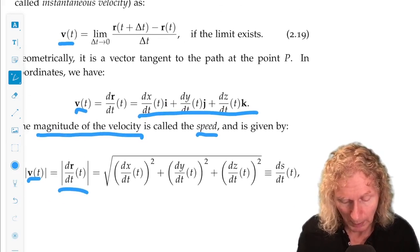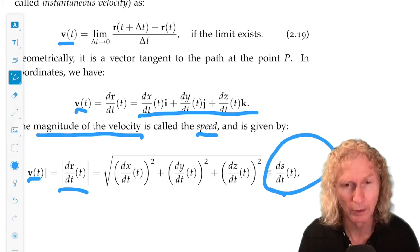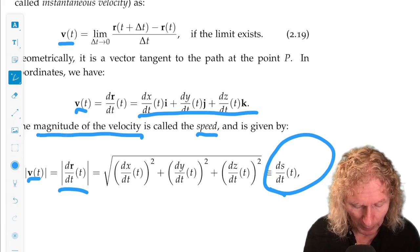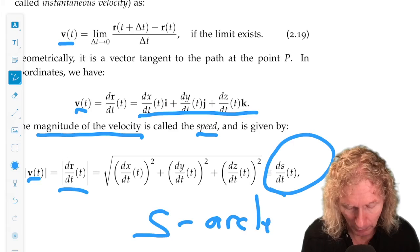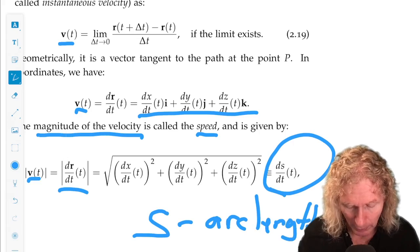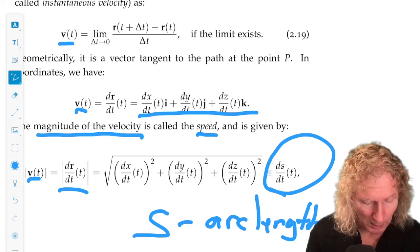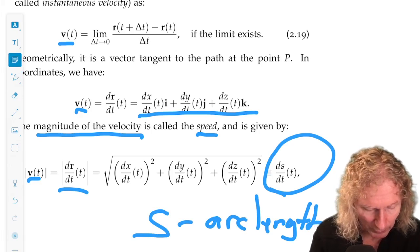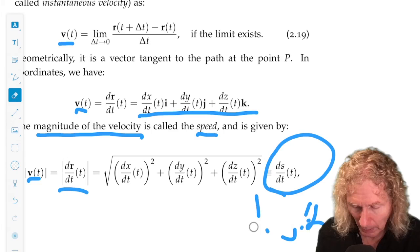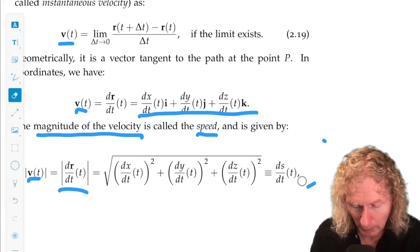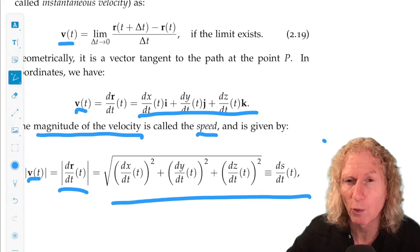Now, now comes an important idea here that's going to be useful. For example, this parameter s is referred to as the arc length, the length along the curve, measured with respect to some initial point. Now, if the curve is given,